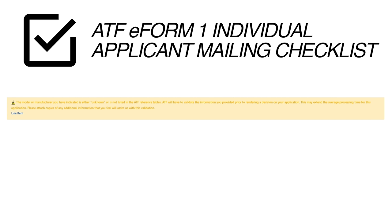Mailing Instructions. We will now discuss the ATF eForm 1 mailing checklist. After submitting your application to the ATF, the ATF will email your cover sheet and your ATF Form 1. If your application had a yellow triangle on the Certify page, then your application will start in the Pending Research status. This means that your ATF Form 1 will be watermarked Draft and the cover sheet won't have a valid control number or serial number. In this case, you will need to wait for the ATF to review your application. Once reviewed, the ATF will change your application from Pending Research to Submitted, and you will receive another email with your ATF Form 1 watermarked Submitted and a valid cover sheet. This can take the ATF up to 150 days to change your application from Pending Research to Submitted.